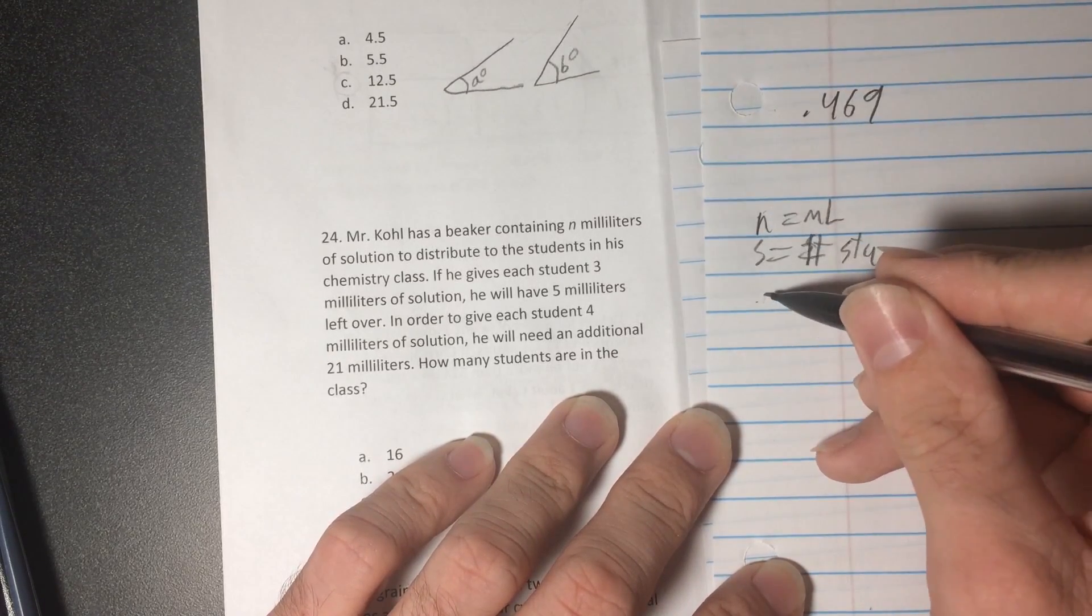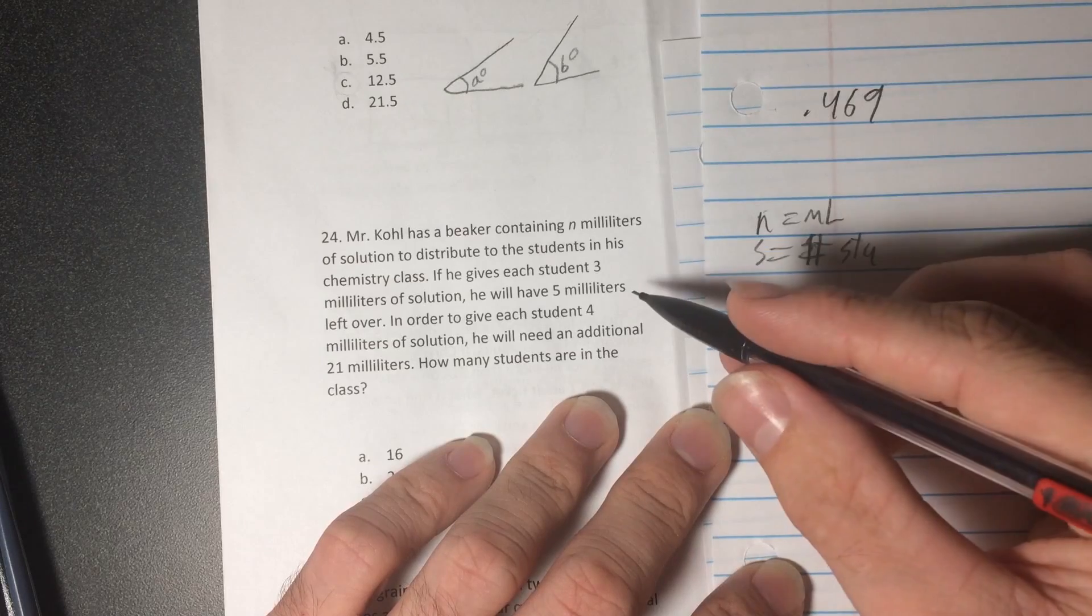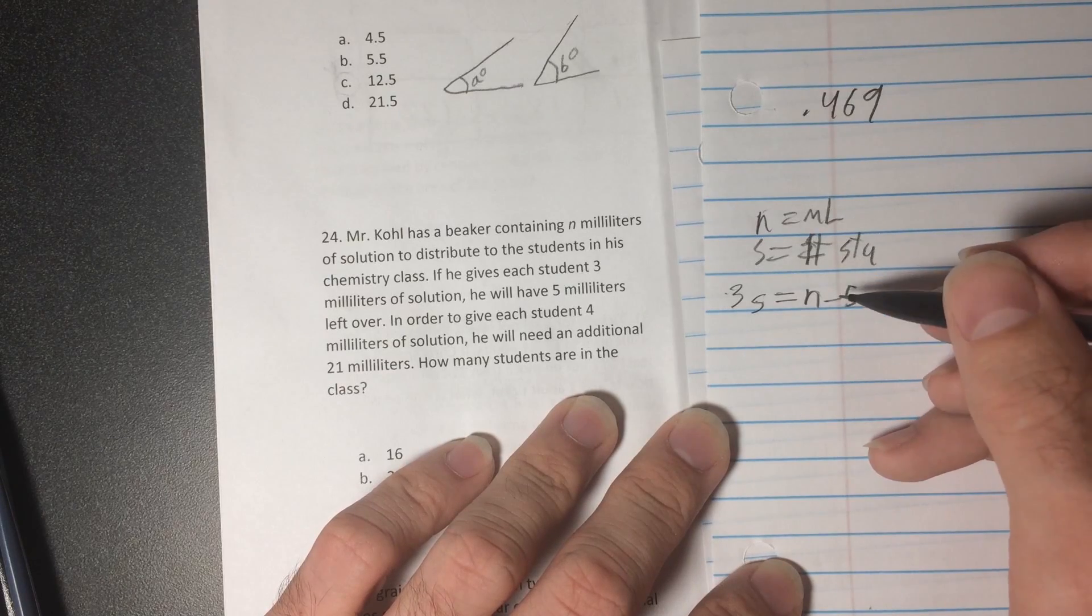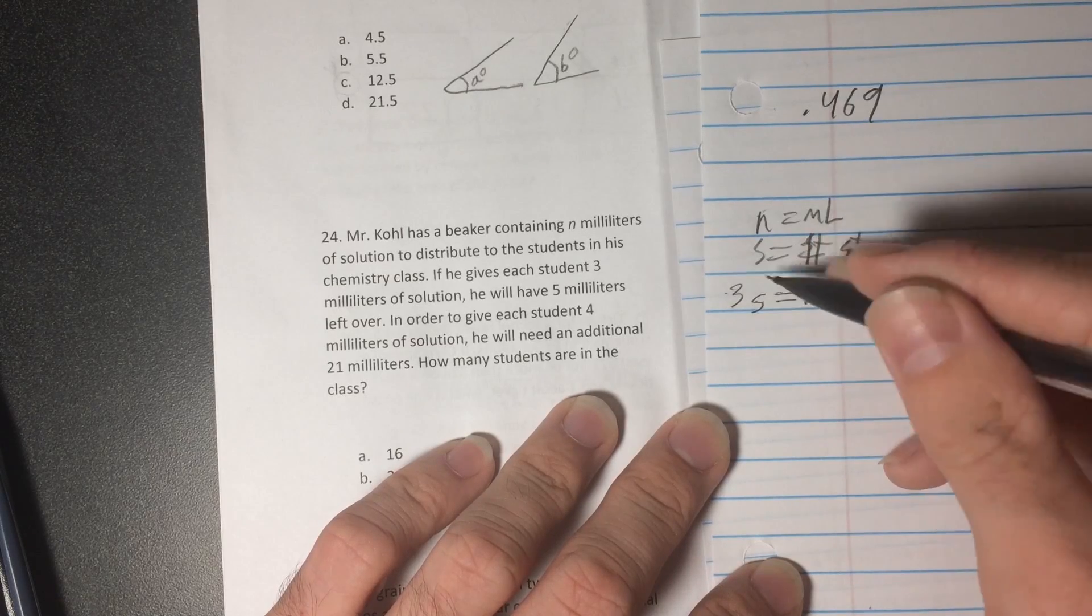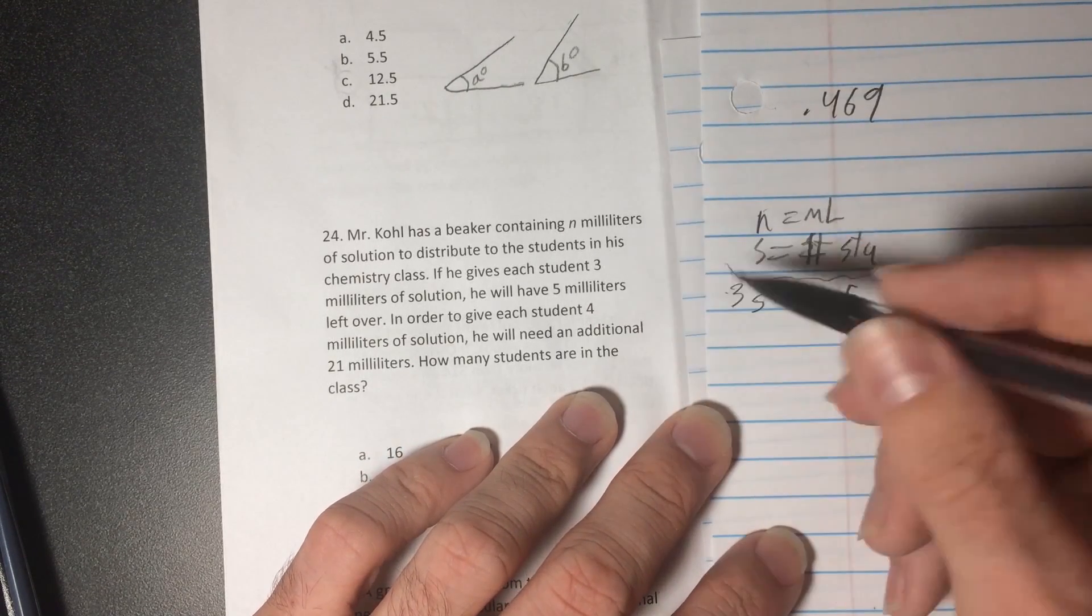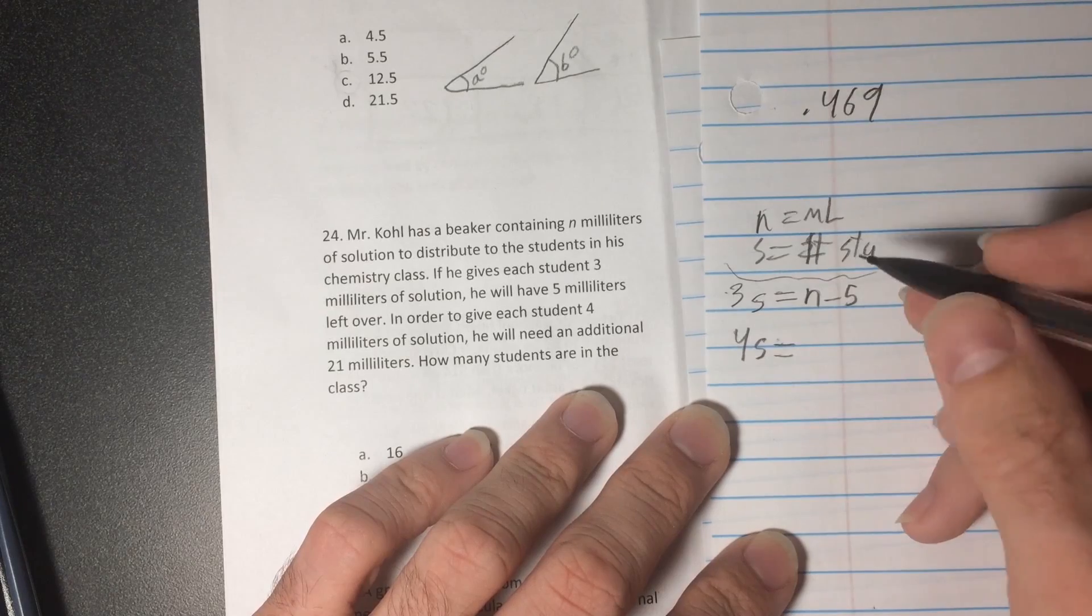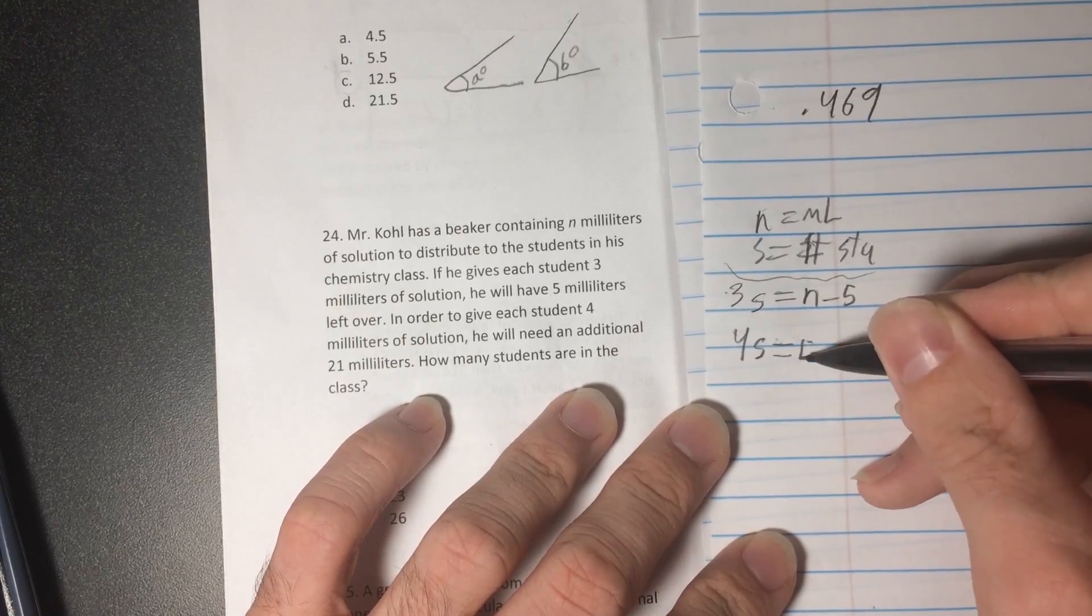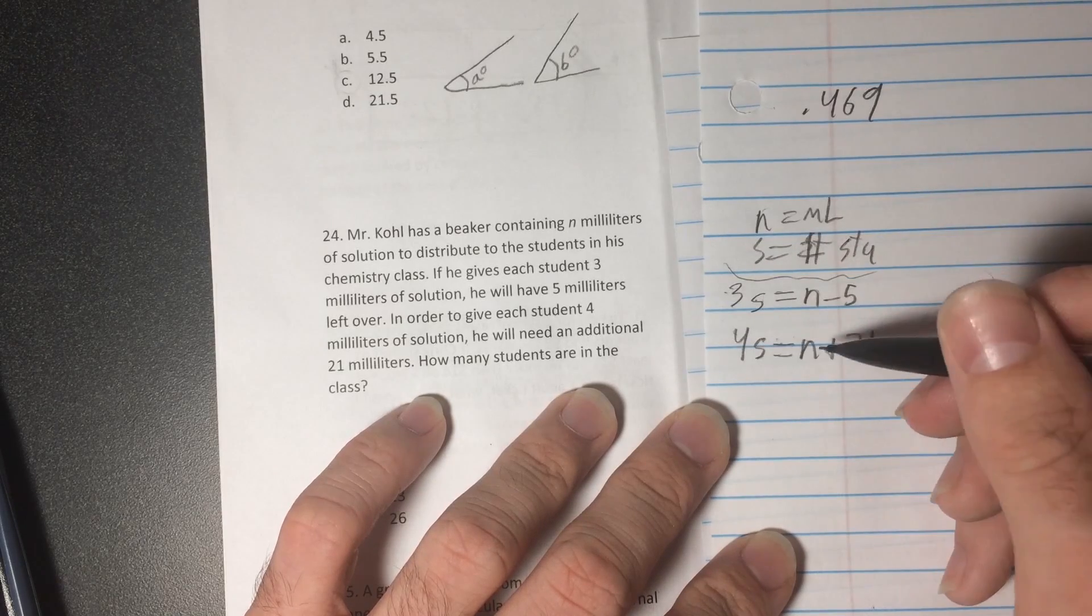And it really sets us up to write equations. Whenever they give you numbers and he has 5 left over or something like that, you can write a system of equations. So if he gives each student, the number of students, 3 milliliters, so 3 milliliters times the number of students, he will have 5 milliliters left over. So that's the total minus 5, because 5 is left over. And so if that 5 was consumed in here, then he would have the full amount, but he didn't. So this amount is equivalent to this amount. So that's our first equation. And then our second equation, in order to give each student 4 milliliters of solution, so in order to give 4 milliliters to each student, he will need an additional 21 milliliters. And that's in addition to the numbers that he has to distribute. So we can do N plus 21.